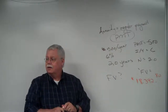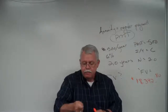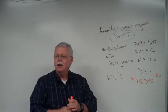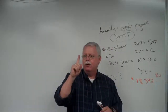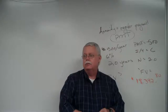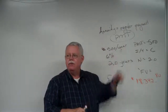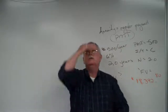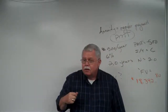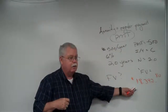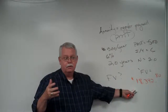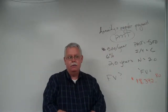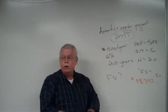When I say $500 a year — every January 1st I go to the bank and give them $500, once a year, similar to an IRA except depositing once a year rather than monthly. How much money did I invest out of my pocket? $500 a year for 20 years is $10,000. I got $18,000 plus out of the bank — that's compound interest. I made $8,392 over and above my investment over that 20-year period.